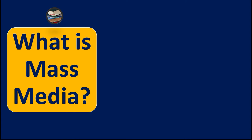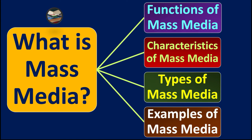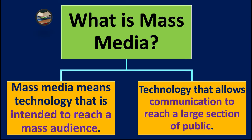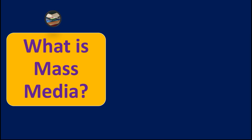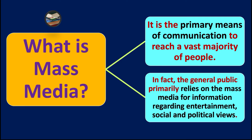Now we will discuss mass media — covering its functions, characteristics, types, and examples. Mass media means technology intended to reach a mass audience. In other words, it is technology that allows communication to reach a large section of the public. It is the primary means of communication reaching the vast majority, and the general public relies on mass media for information, entertainment, social, and political views.